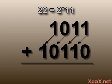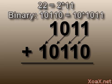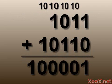Multiplying by 2 in binary is similar to multiplying by 10 in decimal. Now if we add these two numbers we get 1 0 0 0 0 1, which equals 33.